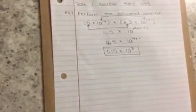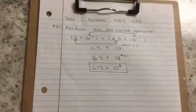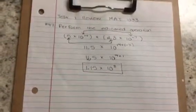I have one digit to the left of the decimal. That's my final answer. This is number 47, Test 1 Review, MAT 1033, Intermediate Algebra.